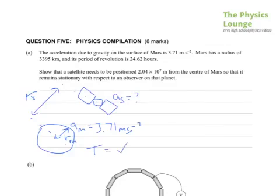We're given the acceleration at the surface of Mars, AM, which is 3.71 metres per second squared. And we don't know the acceleration of the satellite, but we do know the time period for both is the same, little over 24 hours. The question actually very nicely leads you into the equations to use by giving you this information.